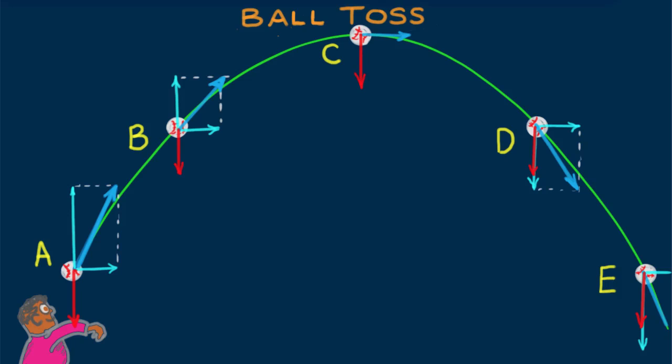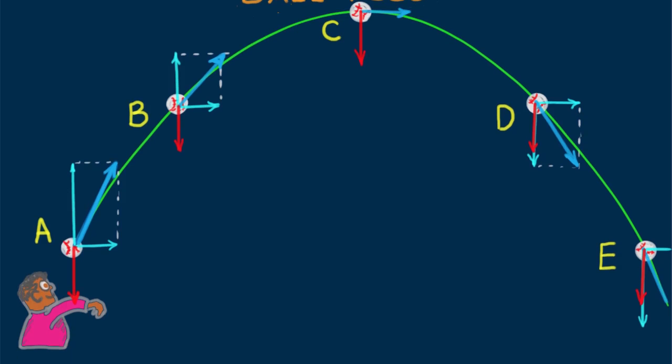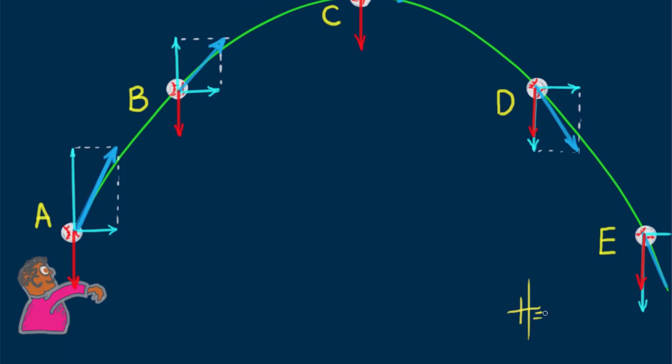Here's my question. What would an acceleration vector look like at the top of the path at point C? What would be the acceleration of the ball at this highest point? Think carefully about that. Until next time, good energy.